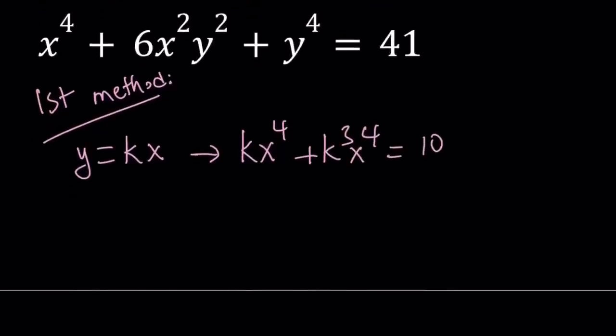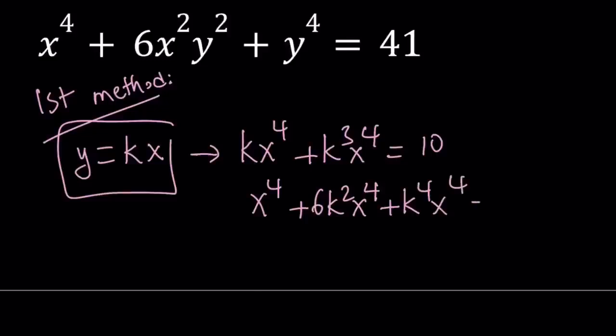Obviously here we can factor out x⁴. That's the goal. Let's go ahead and do it with the second equation. Now we're going to replace y with kx. x⁴ is going to be unchanged. y squared gives k²x², so that's 6k²x⁴. And finally, y becomes kx, so it's k⁴x⁴. This equals 41.